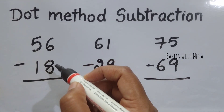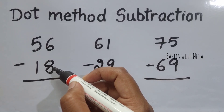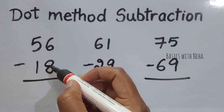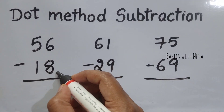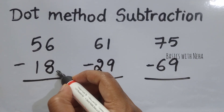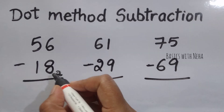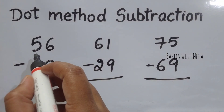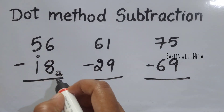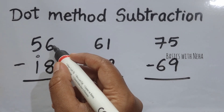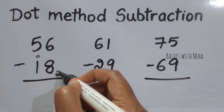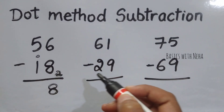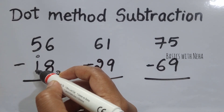When the minuend is smaller than the subtraction, it is time that we use the complement method. The complement of 8 on base 10 will be 2. Since I've used the complement here, I'm going to put a dot here. Now we have to add the minuend and the complement number, which is 6 plus 2 is 8.